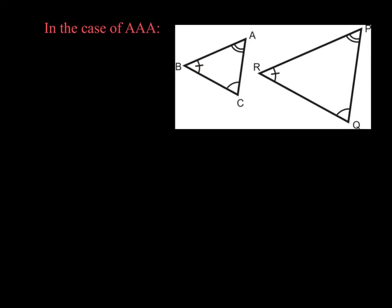If I were to take the smaller triangle, triangle ABC, and enlarge it on a photocopy machine, I could produce the triangle labeled PQR. Enlarging the smaller triangle doesn't affect the angle sizes, but clearly they're no longer congruent because they're of different sizes.